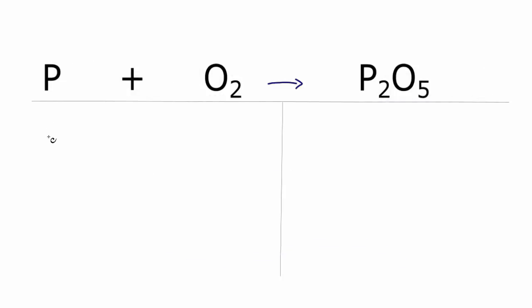So we'll add the atoms up on each side of the equation. Phosphorus we have one, oxygen we have two. Over on the products, phosphorus we have two and oxygen we have five of those.